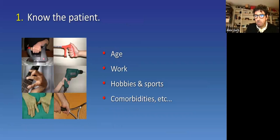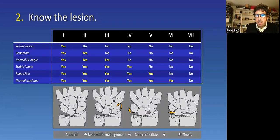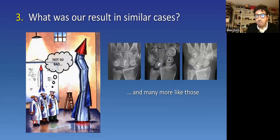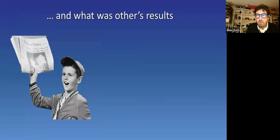Knowing the patient means taking into account age, work, hobbies, sports, comorbidities, etc. Knowing the lesion means in which point of the scapholunate lesion spectrum our patient is. What was our result in similar cases means be critic and realistic with our results. We've done many scapholunate surgeries, which means that we have had many complications and frustrating results. So, we have to learn from that. And we should also learn from others' experience.